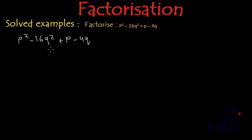We have one clue over here. Here we have 4q and this 16q square can actually be written as 4q whole square. And let's write this p minus 4q as it is for the time being.